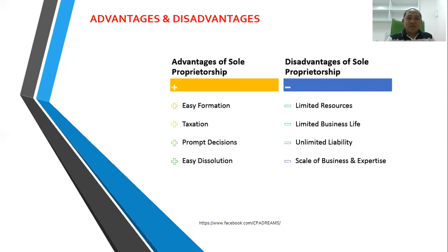The disadvantages of sole proprietorship: you have limited resources and limited business life. Studies show most start-ups fail in the first two to five years — about 80% — due to lack of business expertise. Also, if you go bankrupt, your suppliers and creditors can go after your personal assets. Even assets not owned by the business are covered since you are the main owner — you will still use personal funds to pay.